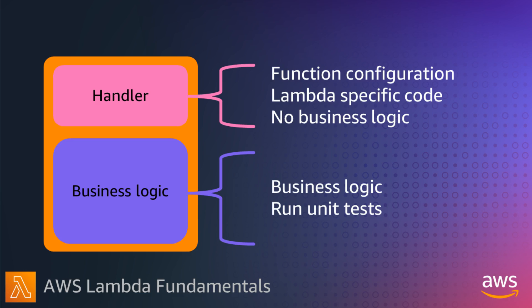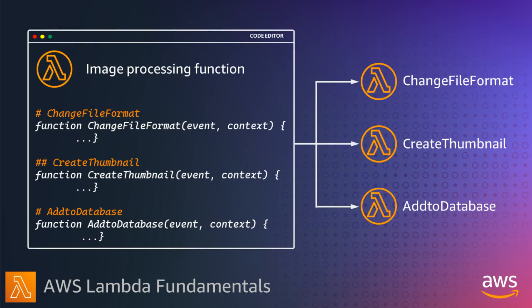It also helps to make your functions modular and single-purpose if you can. Instead of having a single function that does a whole bunch of things, have multiple functions that each do a single thing. For example, if you have a single image processing function that changes the format, creates a thumbnail, and adds it to a database, think about having three different functions that each handle one process. This improves performance since you don't have to load extra code you don't need, and improves security as each function can be scoped down to only what it needs to do.